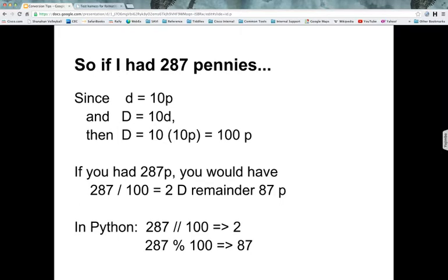All right, so if I had 287 pennies, since d, small letter d, equals 10p and dollars equals ten dimes, then dollars is equal to ten times ten pennies is equal to a hundred pennies at this point, right? And if you had 287 pennies, then you would have 287 divided by 100, which is two dollars, with a remainder of 87 pennies, right?